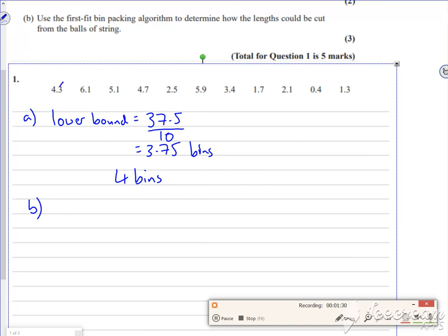So I'm going to put the 4.3 in the first bin. What you can do is say how much is left. So I've got 5.7 left. 6.1 will not fit in bin 1 so it goes into bin 2. So that would leave me 3.9 left. 5.1 will fit into bin 1, so you must go back and check the earlier bins. So 5.1 can go into there. That means now I've got left 0.6. The 4.7 won't fit in the first bin, won't fit in the second bin, so it has to go in the third bin.